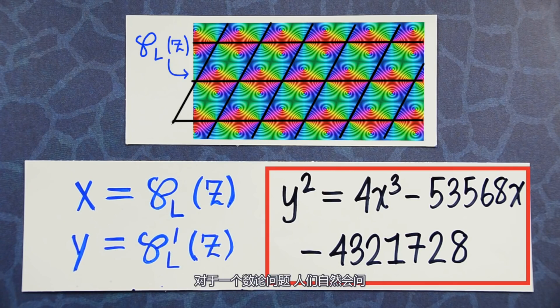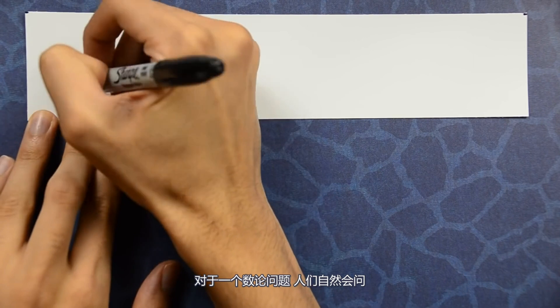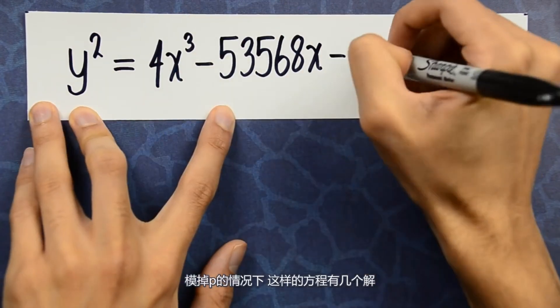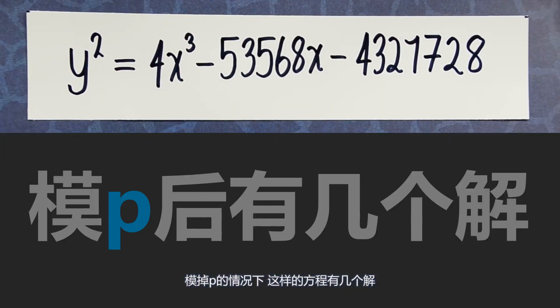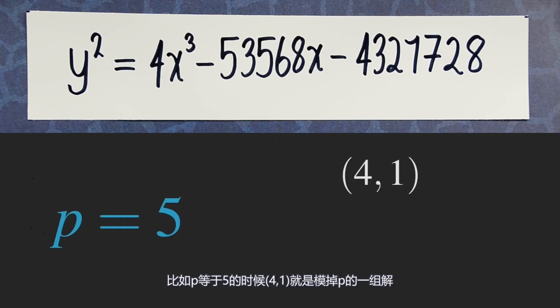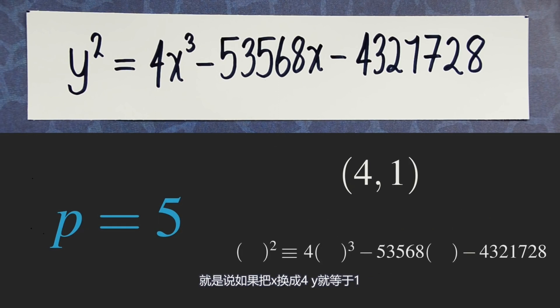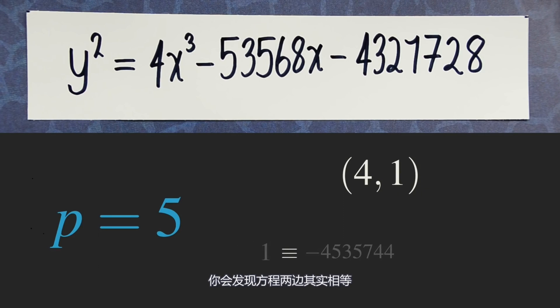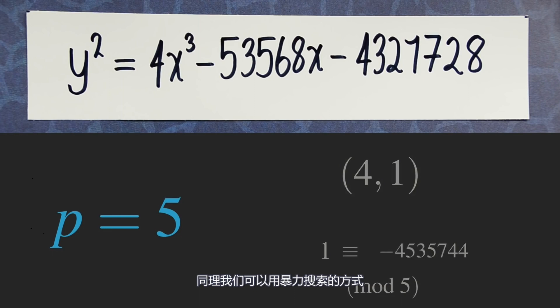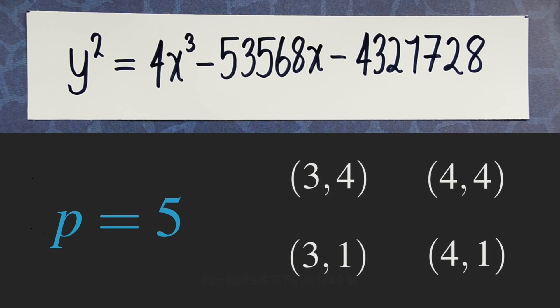In the world of number theory, a standard question people ask when given an equation is: how many solutions are there to this equation mod p, where p is a prime number? For example, if p equals 5, then the pair (4, 1) is a solution mod p — that is, if you substitute x equals 4 and y equals 1, you'll see that the two sides are congruent mod 5. One can check with a brute force search that there are 4 solutions to this equation mod 5.